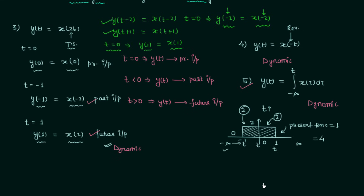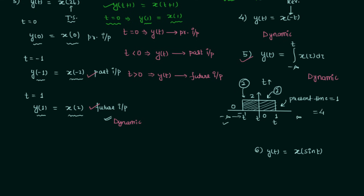In the sixth problem, y(t) = x(sin t). We repeat the same steps as problem 3 and first make t equal to 0. We have y(0) = x(sin 0) = x(0), since sin 0 = 0. You might say the system is static, but to have complete certainty we will check the nature of the system at other instances of time.